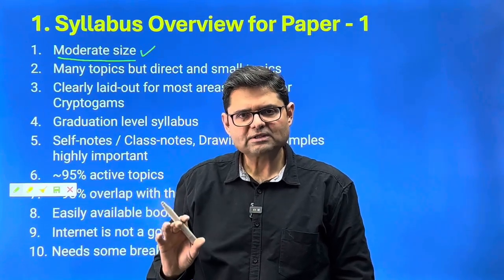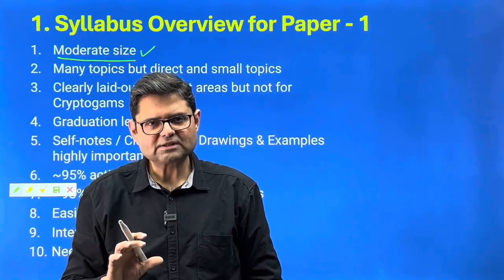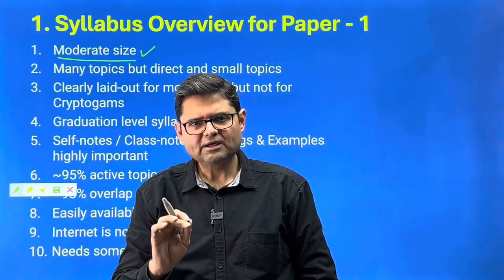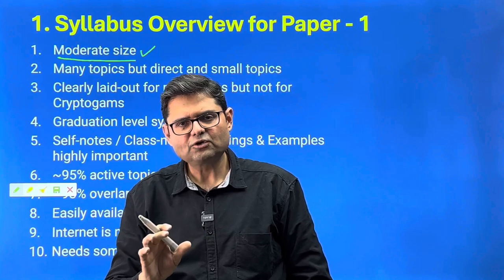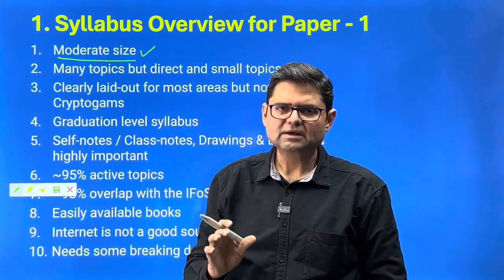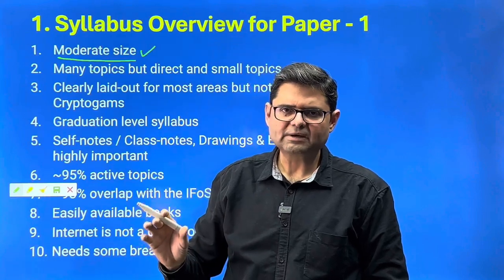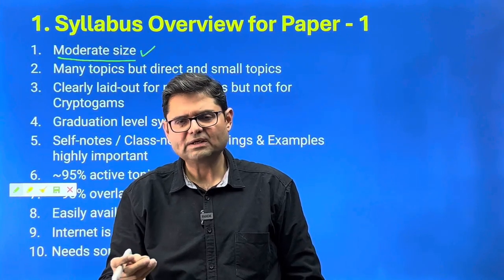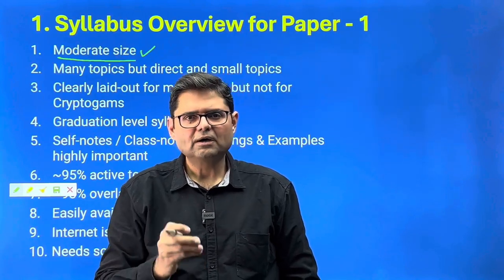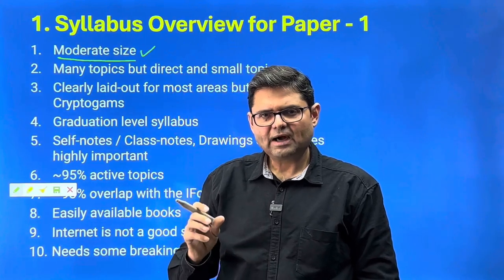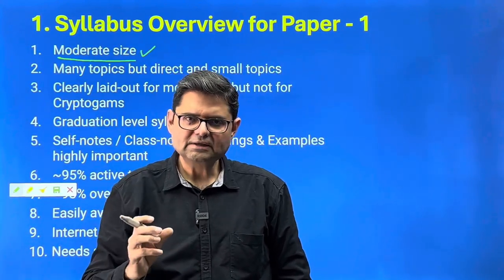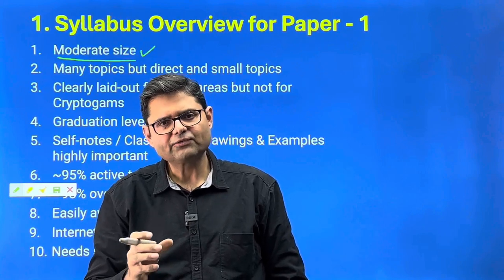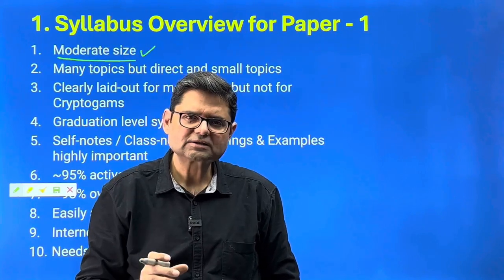Coming back to Paper 1, the topics are direct and pretty small — you do not have to go very deep into subtopic levels. For example, fungal heterothalism: what is heterothalism, in what groups of fungi it appears, how it presents in different fungal life cycles, a couple of illustrations, types of heterothalism, significance, and limitations. These dimensions can be done in about one hour's time, or even half an hour with teacher's guidance.